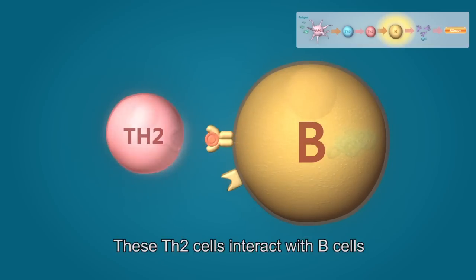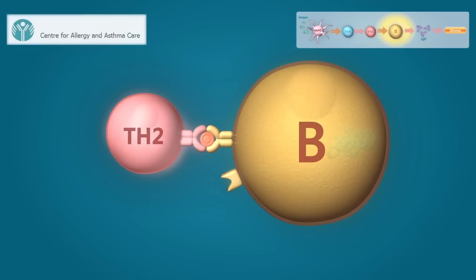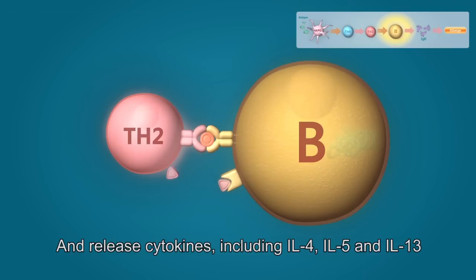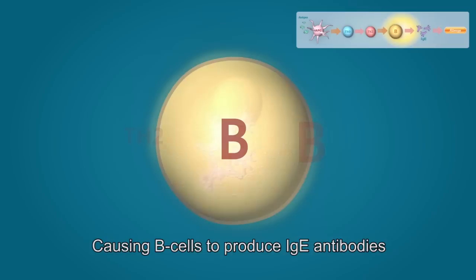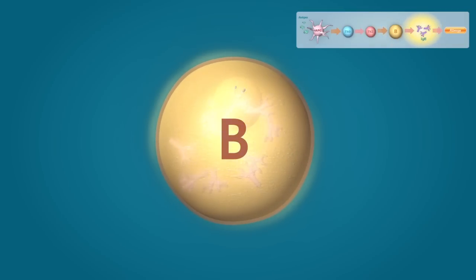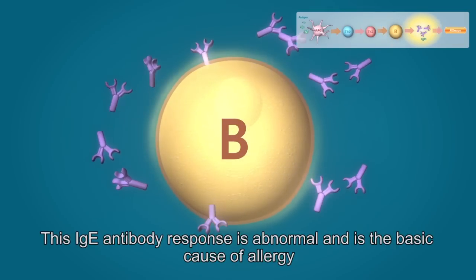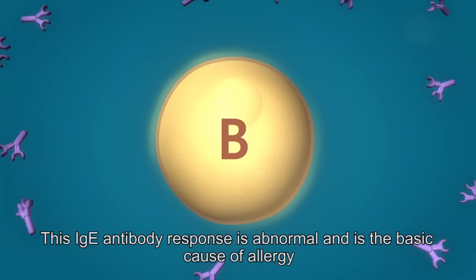These Th2 cells would interact with B cells and release cytokines including interleukin-4, interleukin-5, and interleukin-13, causing B cells to produce IgE antibodies. This IgE antibody response is abnormal, and is the basic cause of allergy.